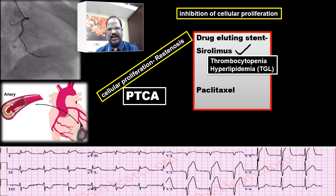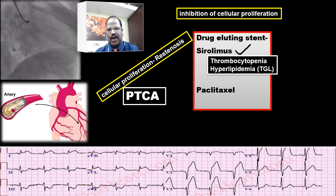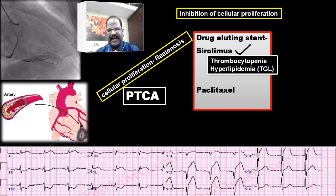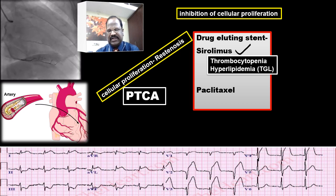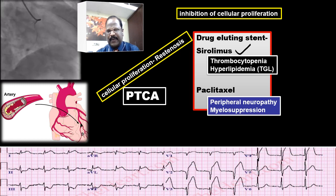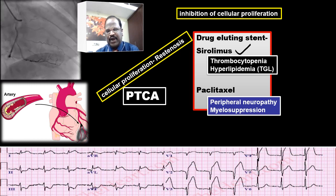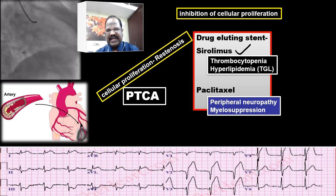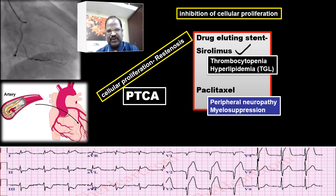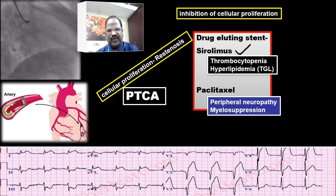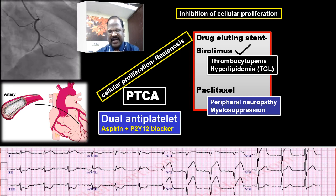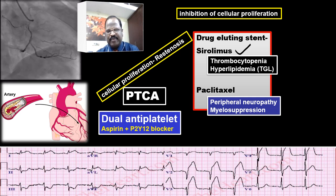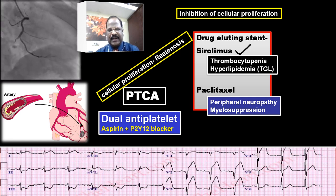Paclitaxel is another drug used in drug-eluting coronary stents. It is an anti-cancer drug belonging to the taxane group. Its adverse effects include myelosuppression, peripheral neuropathy, and allergic reactions. Remember: following angioplasty, the patient should be on dual antiplatelet drugs for a minimum of at least one year.